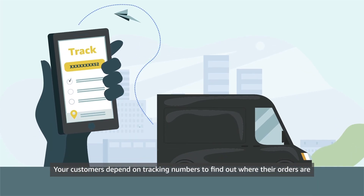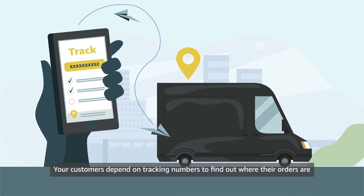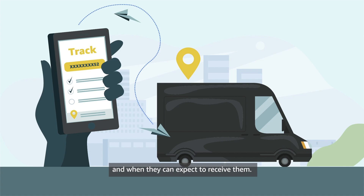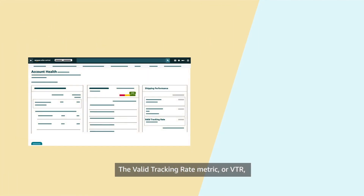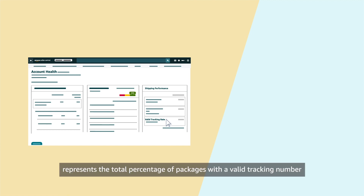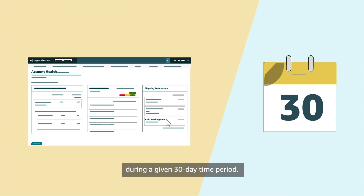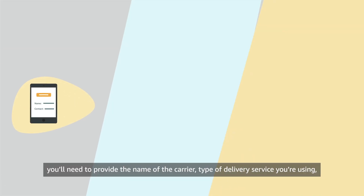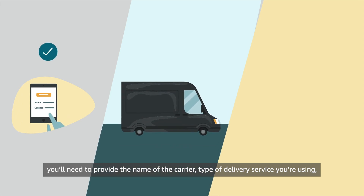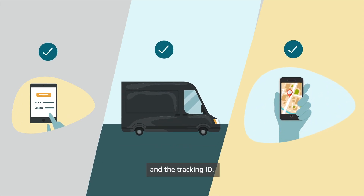Your customers depend on tracking numbers to find out where their orders are and when they can expect to receive them. The valid tracking rate metric, or VTR, represents the total percentage of packages with a valid tracking number during a given 30-day time period. When you confirm a shipment, you'll need to provide the name of the carrier, type of delivery service you're using, and the tracking ID.